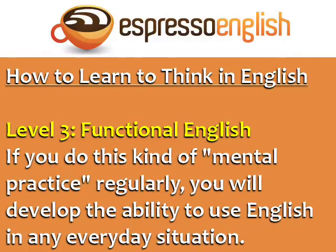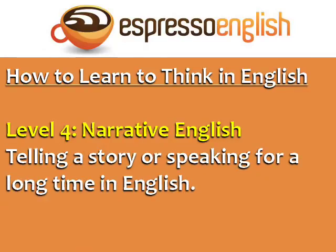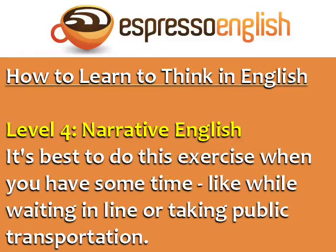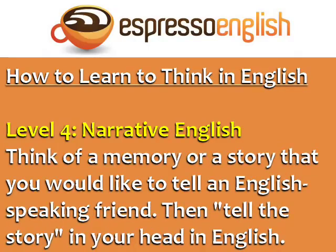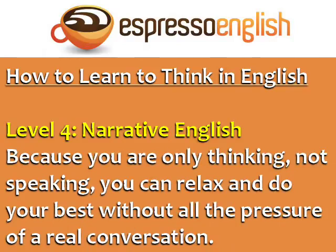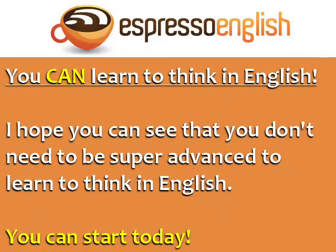If you do this kind of mental practice regularly, you will develop the ability to use English in any everyday situation. Level 4 is narrative English — telling a story or speaking for a long time in English. It's best to do this exercise when you have some time, like when you're waiting in line or taking public transportation. Think of a memory or story that you would like to tell an English-speaking friend, then tell the story in your head in English. Because you are only thinking, not speaking, you can relax and do your best without all the pressure of a real conversation.